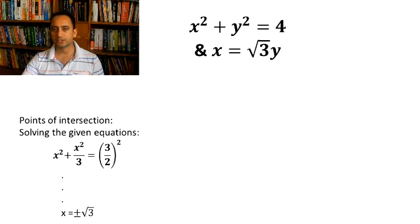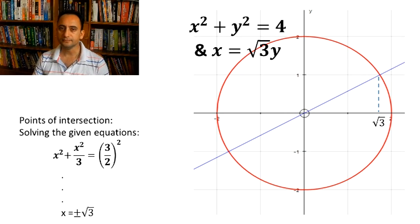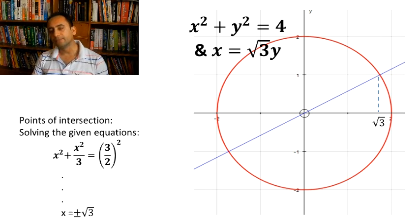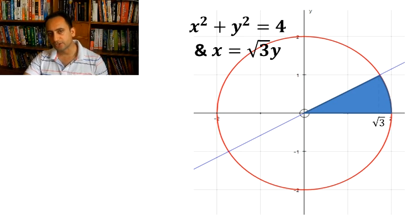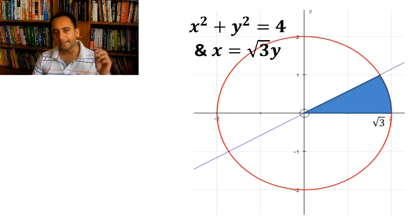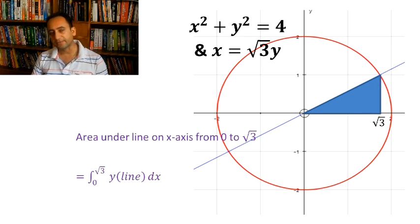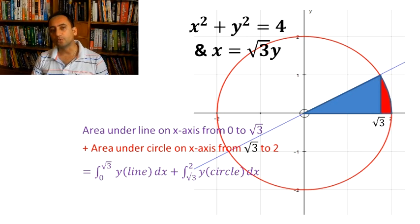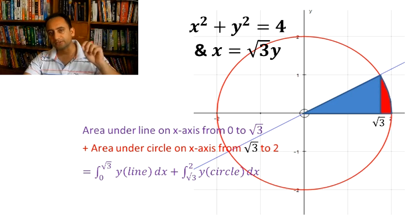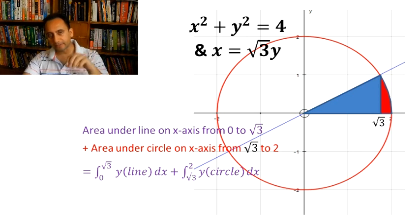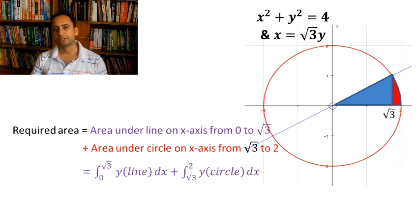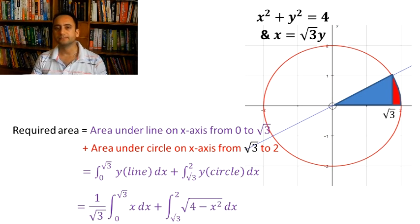Let's plot the graph of these functions. The area we need to find in the first quadrant is: area under the line from x = 0 to √3, plus area under the circle from x = √3 to x = 2. So we integrate y with respect to x — in the first interval, y from the line from x = 0 to √3; in the second, y from the circle from x = √3 to 2. Substituting the values of y from the given equations and solving the integral gives the answer.